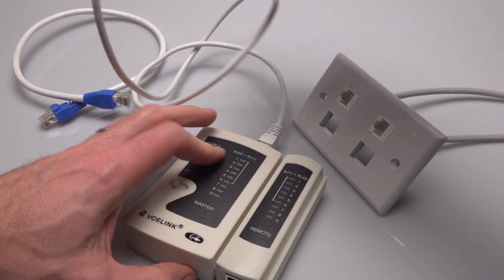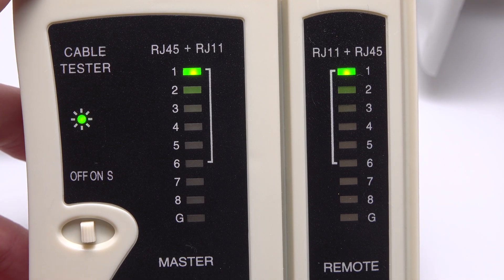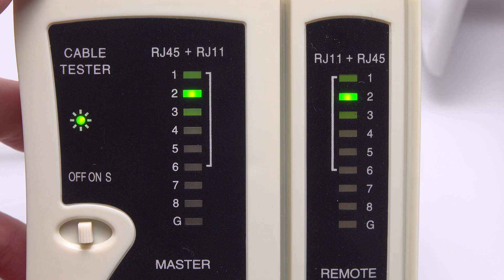The network cable tester works by sending a pulse down each wire in turn from the master to the remote. You should see the sequence going from one to eight on both ends and when it does you know the cable's wired up correctly.